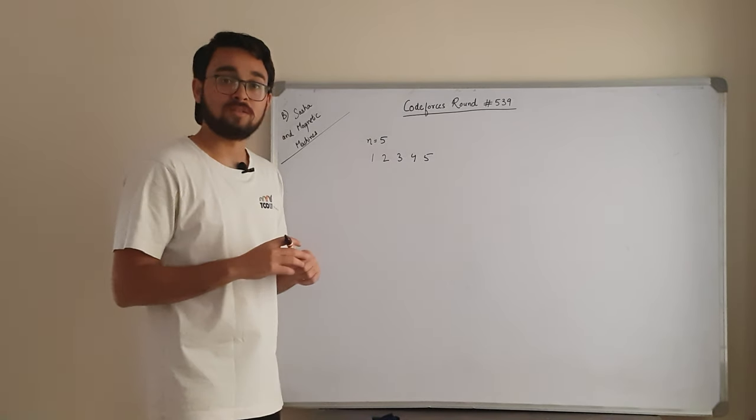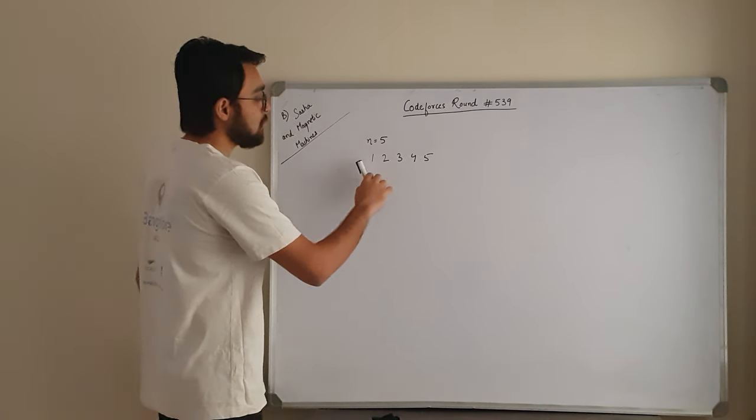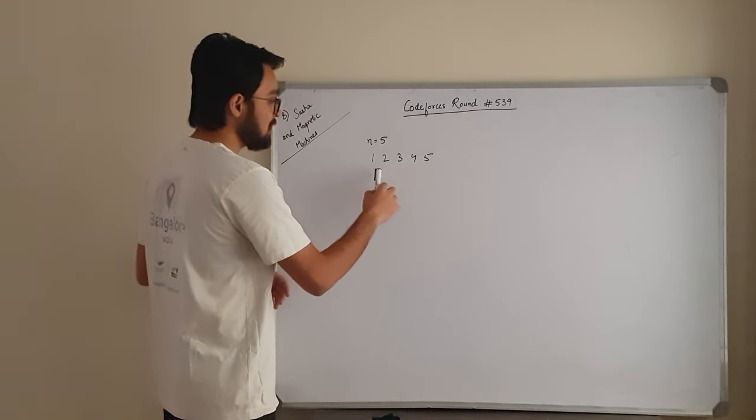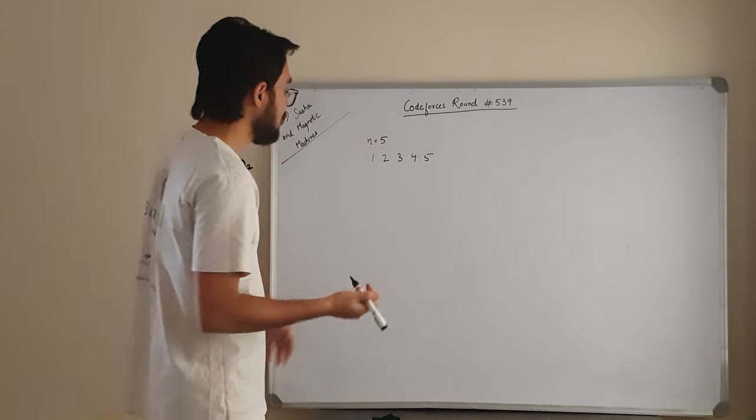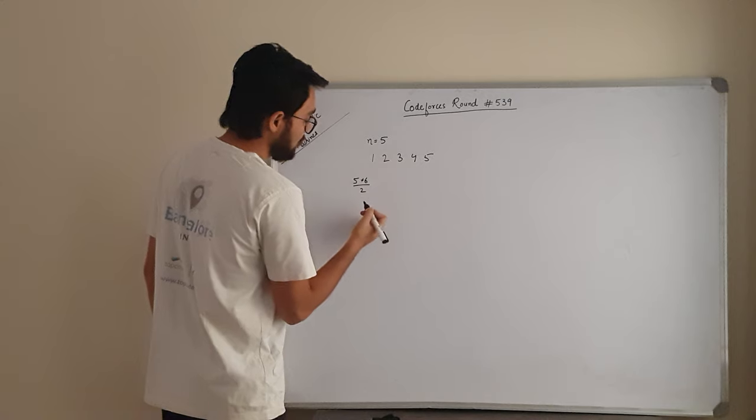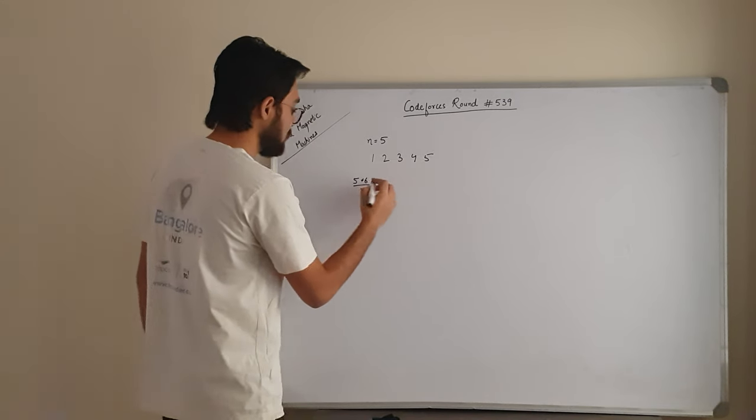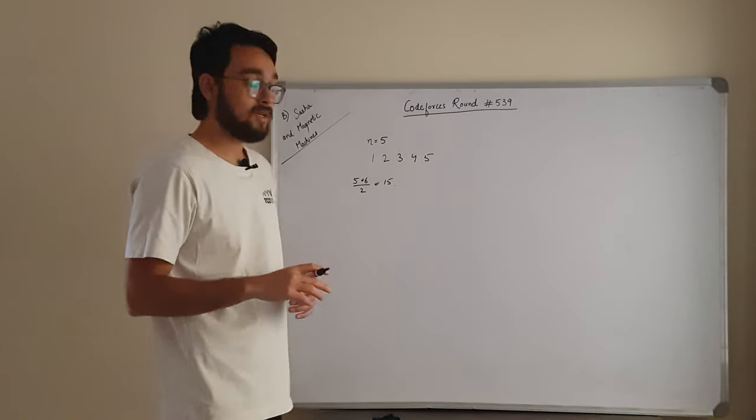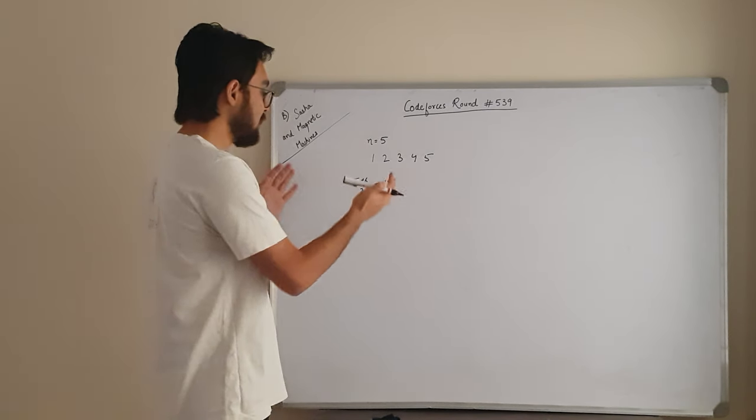So what is the cost? They have defined the cost as sum of all the elements of the array. So in this case, if you take the array like this, what is the cost? It is 5 into 6 by 2, which is basically sum of n natural numbers, which gives you 15. So this is how they have defined the cost.